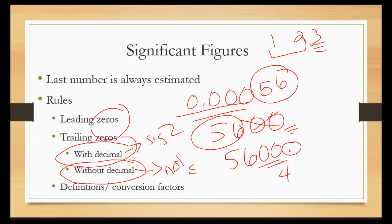And there are tutorials to go over this in more detail. If by chance you have a definition or a conversion factor such as 100 centimeters is equal to 1 meter, you do not count those in significant figures. There is a known entity and you don't have to worry about them. It's infinite.